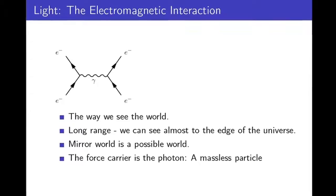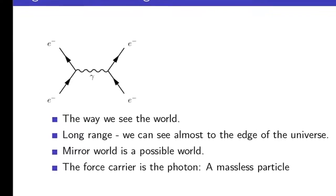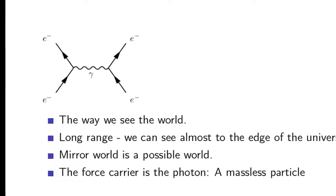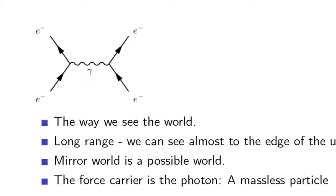With every force we associate a particle which mediates or carries that force. For the electromagnetic force it is the photon — the particle from which light is made. A Feynman diagram shows two electrons coming from left to right, exchanging a virtual photon, represented by a wavy line, and getting scattered. Everything that involves seeing is really through an interaction like this — the electrons on my face interacting with electrons in your retina.